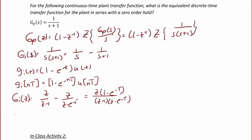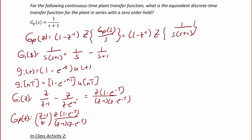Finally, GP(z) = (z−1)/z · z(1 − e^(−T)) / [(z−1)(z − e^(−T))]. Notice that (z−1)/z is another way of writing (1 − z^(−1)). Collecting common terms, the final answer is GP(z) = (1 − e^(−T)) / (z − e^(−T)).